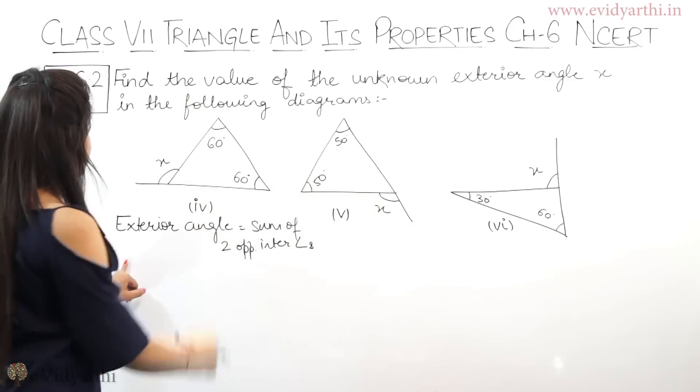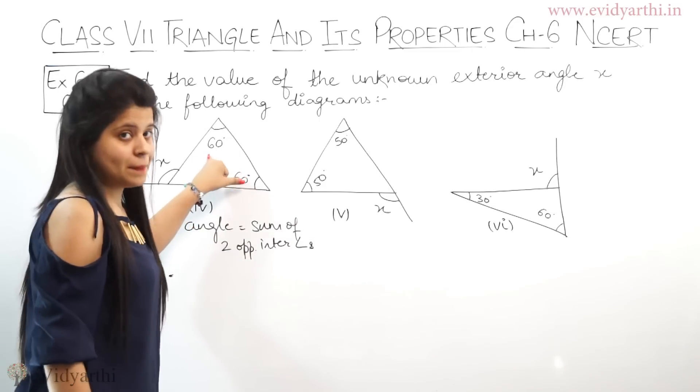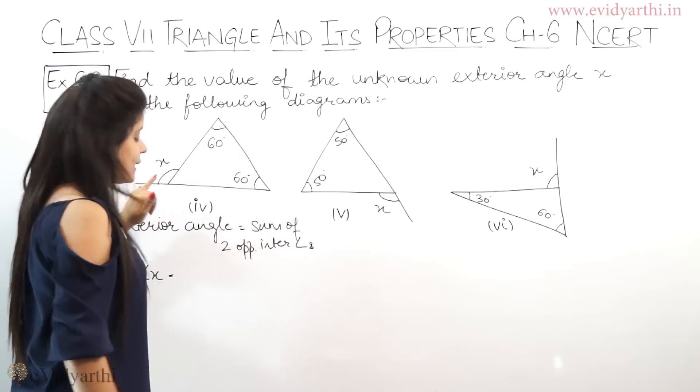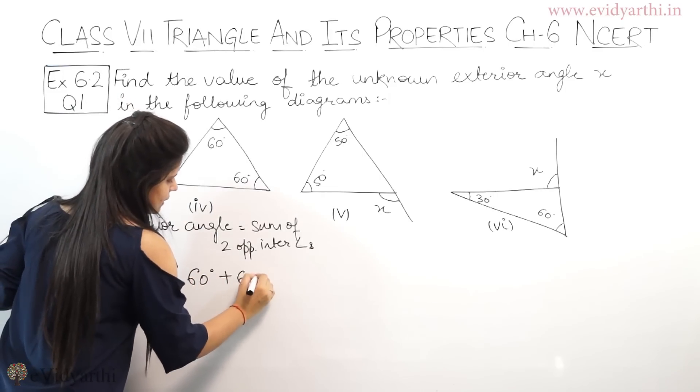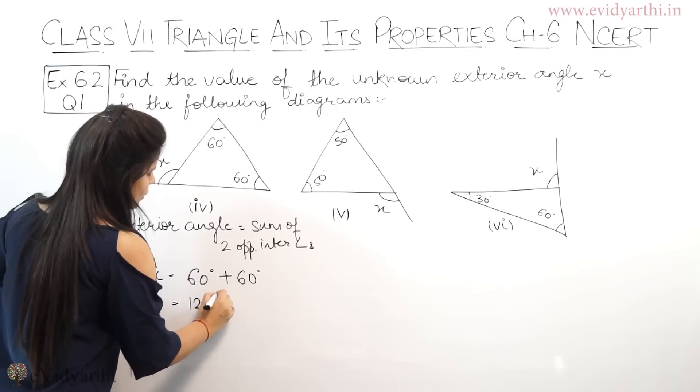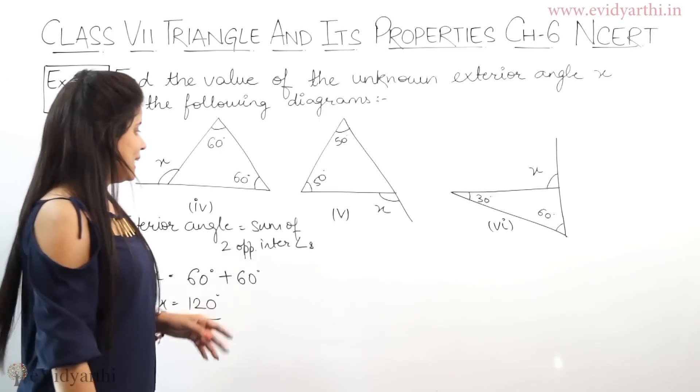Angle X equals to 60 plus 60 degrees. This is 60 degree plus 60 degree. This will give me 120 degree. This means that angle X is 120 degree.